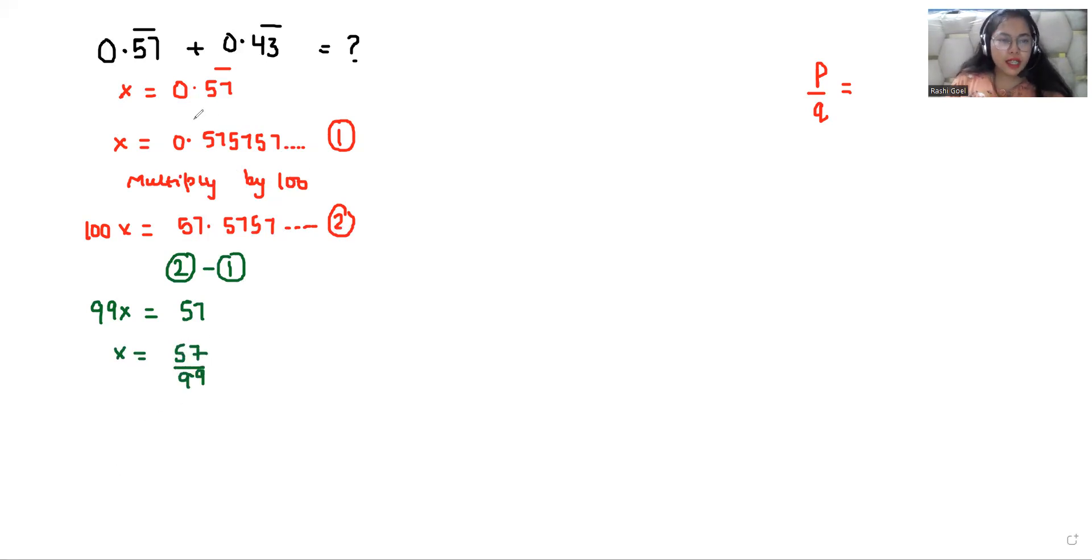Now comes to the second number. I'll take it as Y. Y equals 0.43 bar. Again Y equals 0.434343 and so on.